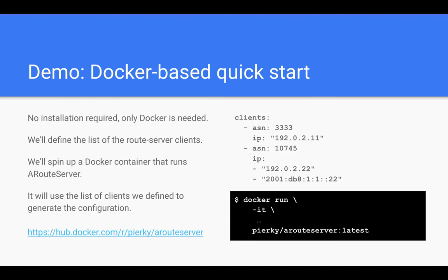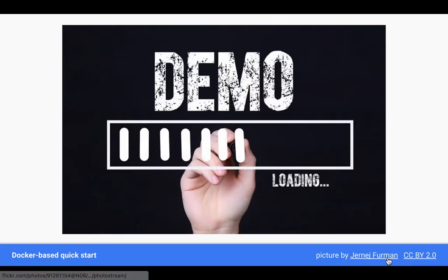Let's start with the Docker-based demo. Here we are not going to install ARouteServer locally — we will just need a running Docker instance. We'll use the ARouteServer Docker image from Docker Hub to build a route server configuration with all the desired features in place. The application will run within the container where it's already set up with all needed dependencies installed.